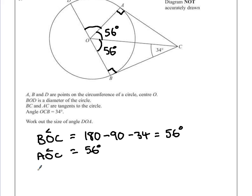So angle DOA is equal to 180 degrees. Subtract the two angles that we know, so take away 56 and another 56.